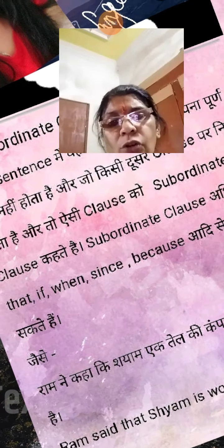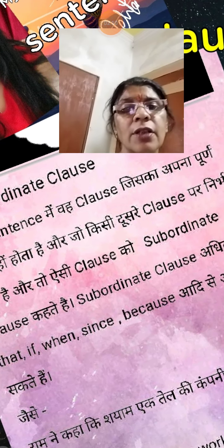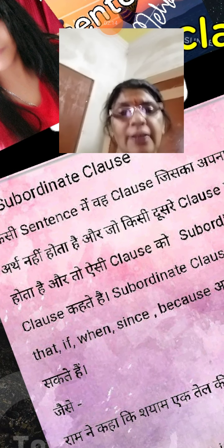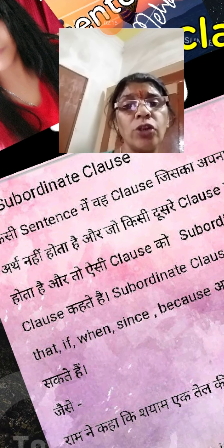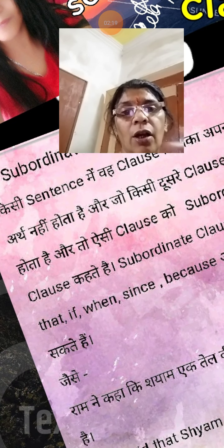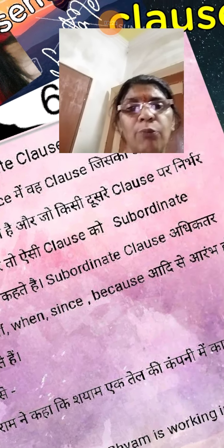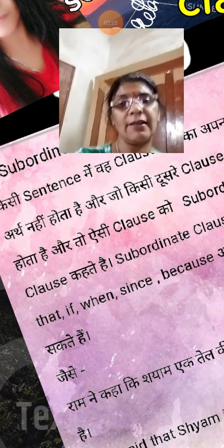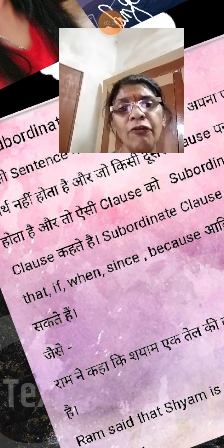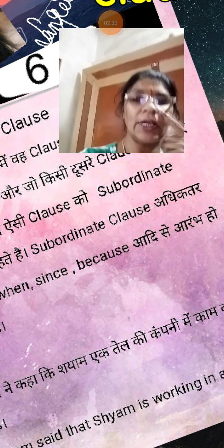Subordinate clause: kisi sentence mein weh clause jiska apna purna arth nahi hota, jo apna full meaning nahi deta hai, aur jo kisi dousre clause par depend karta hai. Aise clause ko subordinate clause kehte hain. Subordinate clause aksar that, if, when, since, because aadi se shuru hota hai.